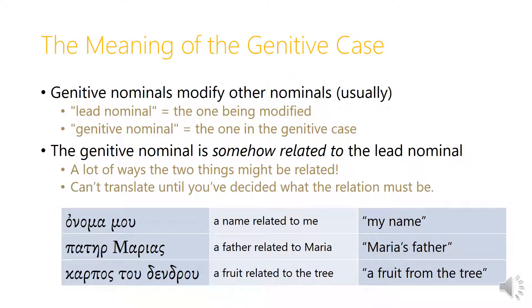Let's think more about the meaning of the genitive case. Genitive nominals generally modify other nominals, though in a few cases they modify verbs. In each case we have a lead nominal and a genitive nominal in the genitive case. What the genitive tells us is that the genitive nominal is somehow related to the lead nominal, but there are many possible relationships, and we can't translate or interpret a genitive phrase until we've decided what that relationship must be.